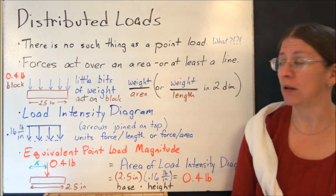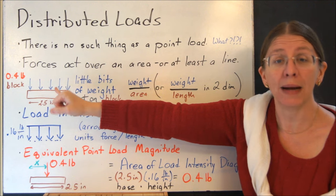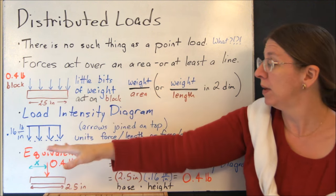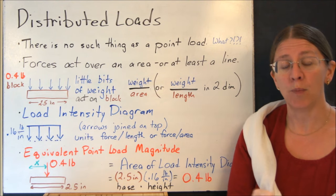Now, how do I get an equivalent point load if I start with this? This is a distributed load or a mechanical load. That's the two things we call them. And they look like this. How do I get that into a point force?